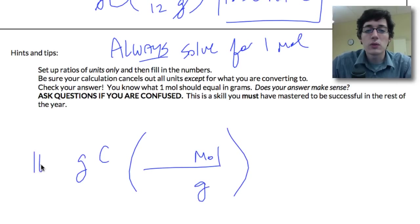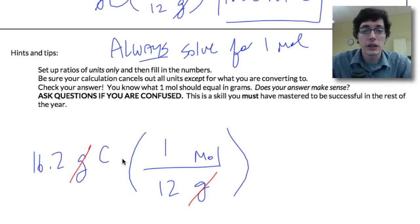Be sure your calculation cancels out all units except for the ones you're converting to. So again, I'll do it in red this time. Our grams cancel out because I've got one in the numerator, one in the denominator. I want moles and I want to keep carbon, so this one is set up correctly.